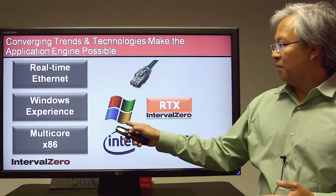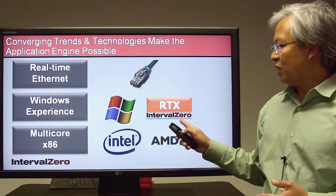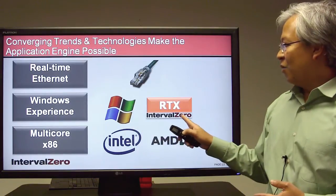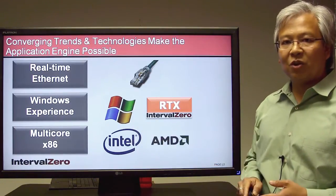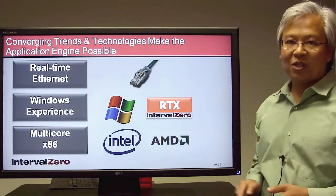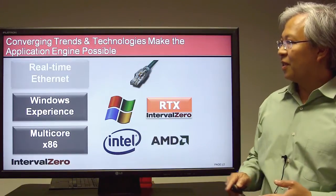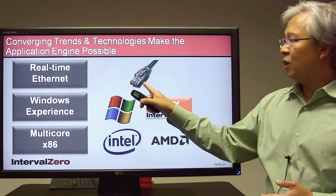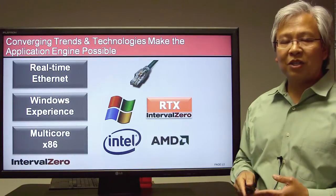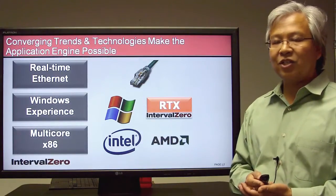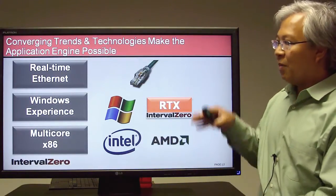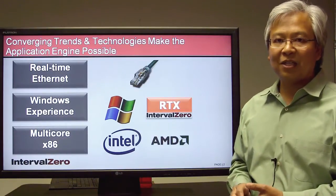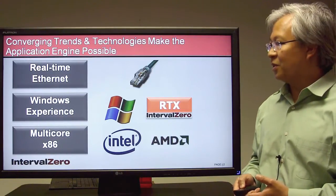Combining Microsoft Windows with RTX gives users a powerful UI while RTX transforms Windows into a real-time operating system with symmetric multiprocessing. And finally, real-time Ethernet — applying low-cost Ethernet hardware to delivering real-time communications. So the combination of all three of these technologies and trends is what makes this real-time platform possible.